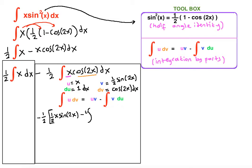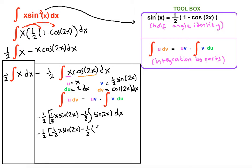v is ½·sin(2x) — pulling the constant to the front — and du is dx. We distribute ½ to both terms and integrate. Rewriting: ½·x·sin(2x) minus ½ times the anti-derivative of sin(2x), which is negative ½·cos(2x).